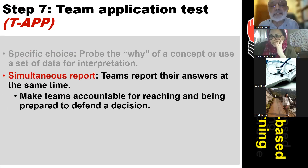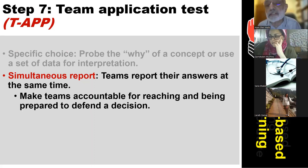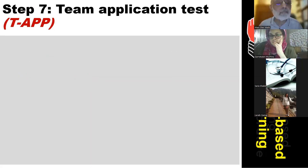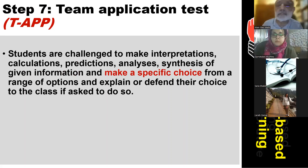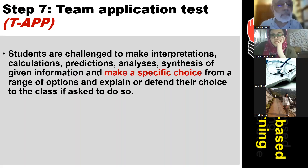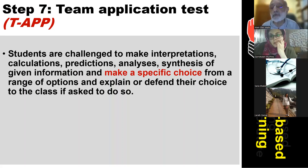For the simultaneous report, once students have finished, they report their answers simultaneously — either on cards or written down — so students cannot change their answers after seeing other groups' responses. Students are challenged to make interpretations, calculations, predictions, analysis, and synthesis — all requiring application of knowledge — and make a specific choice from a range of options, as provided in extended matching questions.